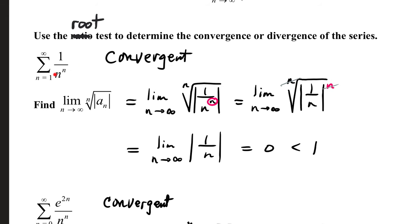So we have our a sub n term is 1 over n to the n. Let's set up this limit. We have limit as n goes to infinity, nth root absolute value of 1 over n to the n. Well, this fraction...